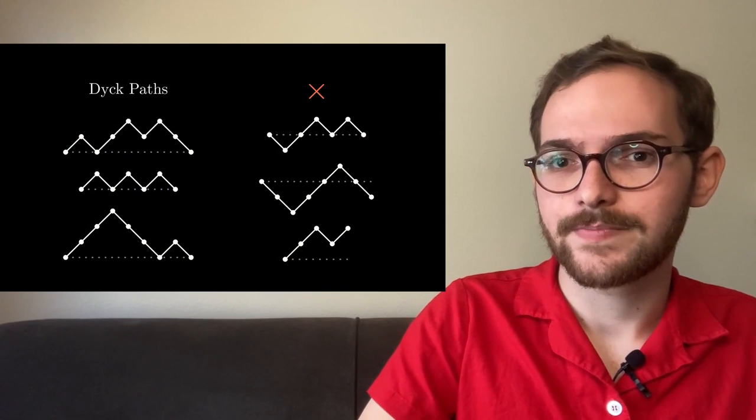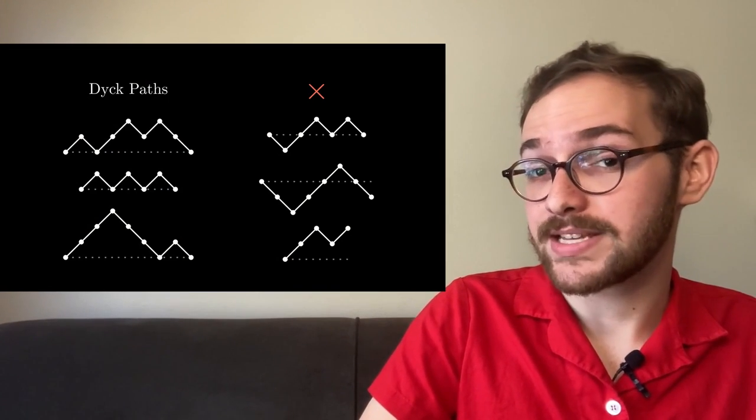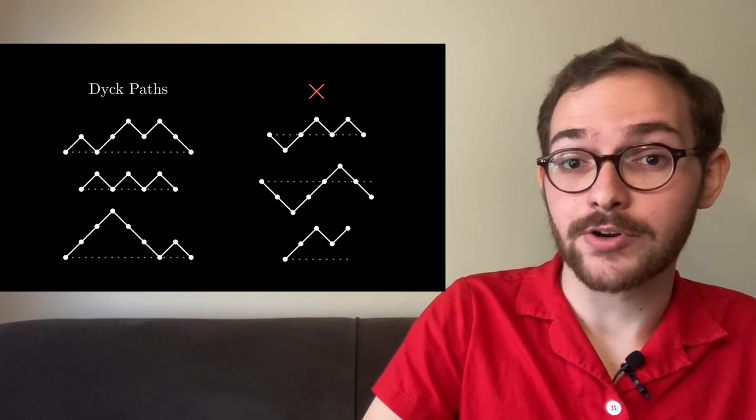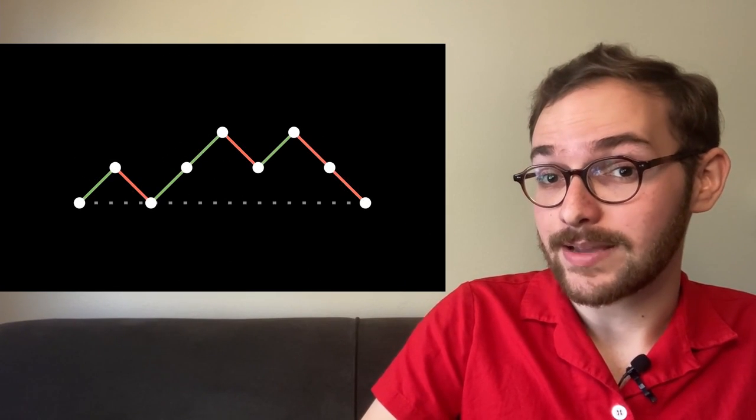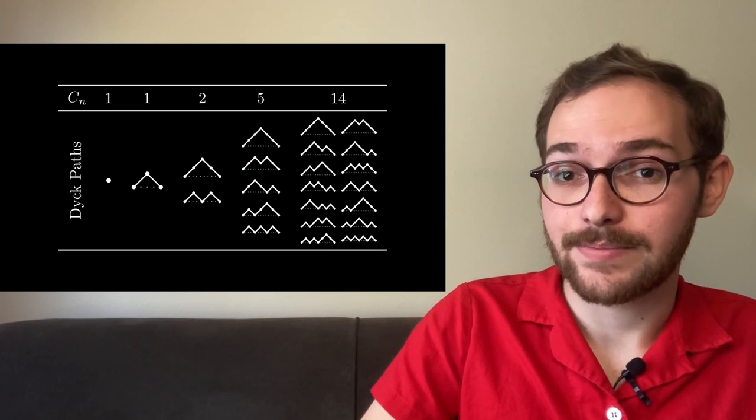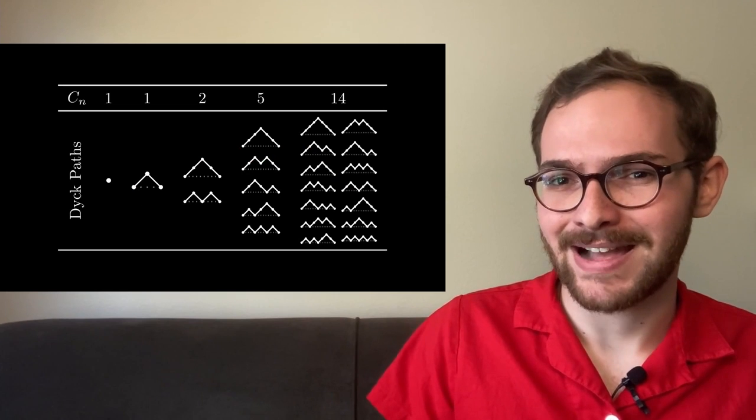Dyck paths. A Dyck path, or mountain range, is a sequence of up steps and down steps that start and end on the x-axis but never go below. Every path has an equal number of up steps and down steps, so we define the nth Catalan number as the number of Dyck paths with n up steps. But these numbers describe so much more than just Dyck paths.